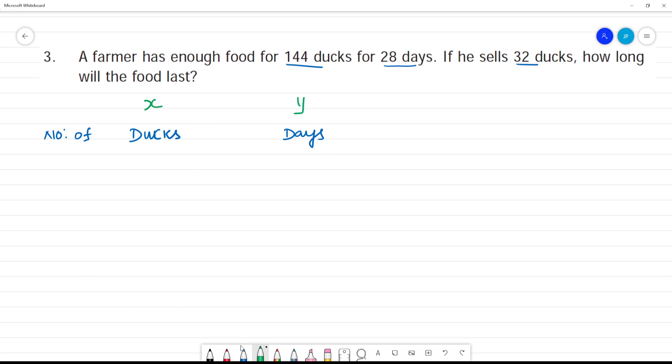First number is 144 ducks. That is x1 - 144 ducks. If you have enough food for 28 days, you have food for 28 days.